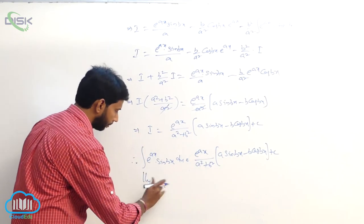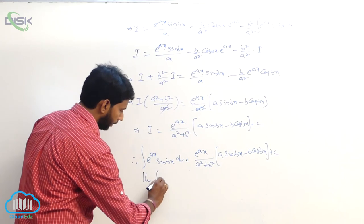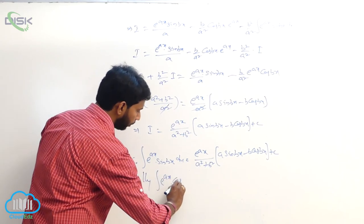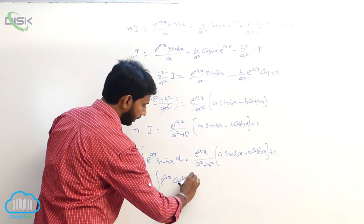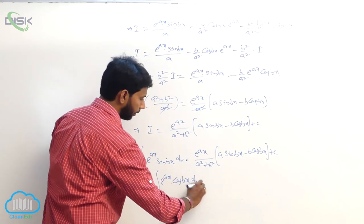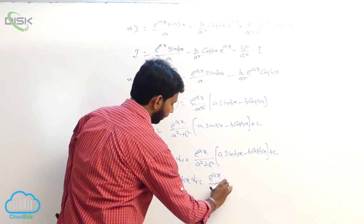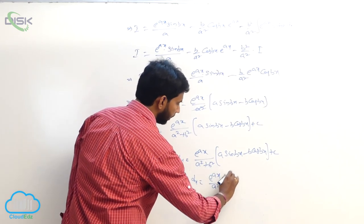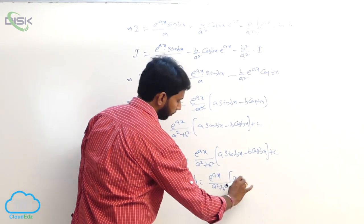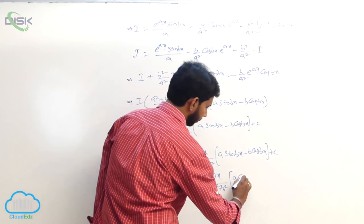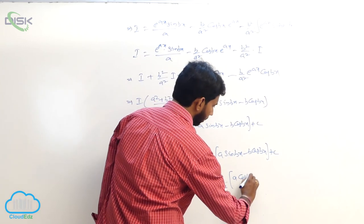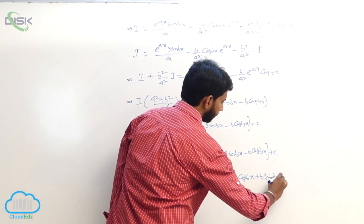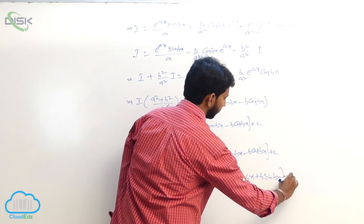Similarly, integral of e power ax into cos bx dx is equal to e power ax by a square plus b square into a cos bx plus b sin bx plus some constant.